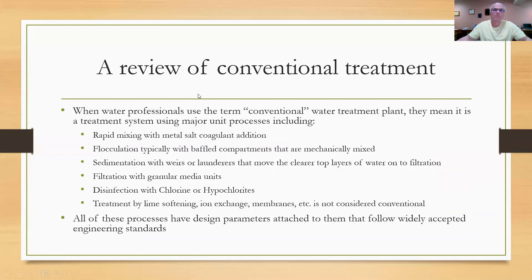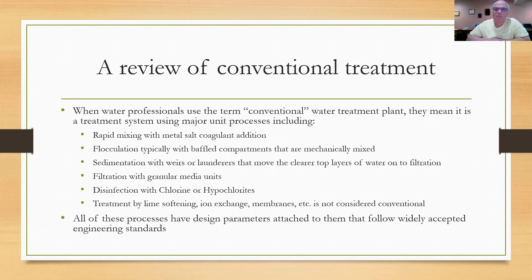Understanding and calculating G-values — part of the advanced math for water plant operators. When water professionals use the term conventional water treatment, they mean a system using major unit processes including rapid mix with a coagulant, flocculation, sedimentation, filtration with granular media units, and disinfection with usually chlorine or something along those lines. Other types of treatment like lime softening, ion exchange, and membranes are a different kind of treatment — specialized treatment processes not considered conventional.